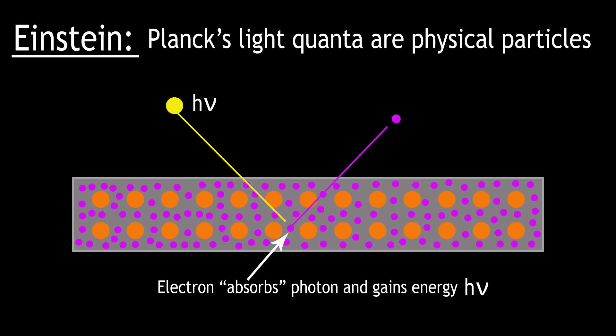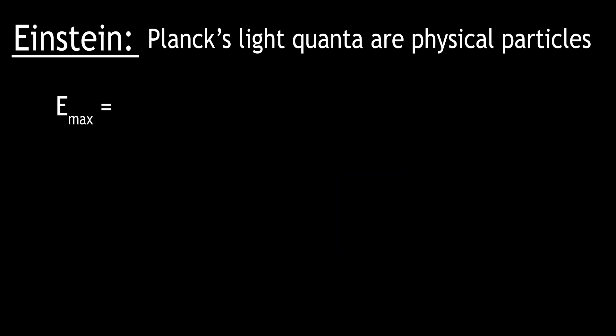The electron, however, will have to do some work to overcome the attraction to the positive ions to keep it bound in the overall structure. So the maximum kinetic energy of the photoelectrons will be the energy imparted on it by the photon, h nu, minus the energy required to leave the metal, something we call the work function phi. The electrons therefore won't be able to leave the metal unless they have enough energy to overcome the work function.